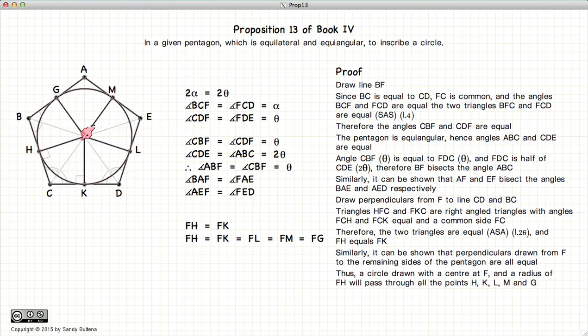In addition, because FK was drawn to be a perpendicular, this is a right angle, which means that the line CD touches the circle, the line BC touches the circle, and thus we have inscribed a circle inside of our pentagon, such that it touches each side of the pentagon.